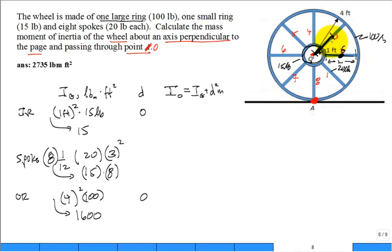From the center of mass of each of those spokes. So where is the center of mass? Just think about it. It's 1.5 away from the inner ring, and the inner ring is 1, so it's 2.5, so it's 2.5.